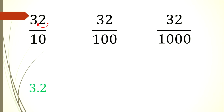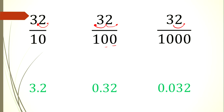For 32/100, we have two zeros, so we move the decimal two places to the left, giving us 0.32. For 32/1000, we have three zeros, so we move three decimal places to the left — one, two, three — and add a zero in the space, giving us 0.032.